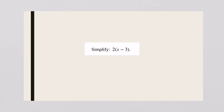So this problem right here, just multiply two times x and two times a minus three. Two times x is 2x. Two times a minus three is a minus six.